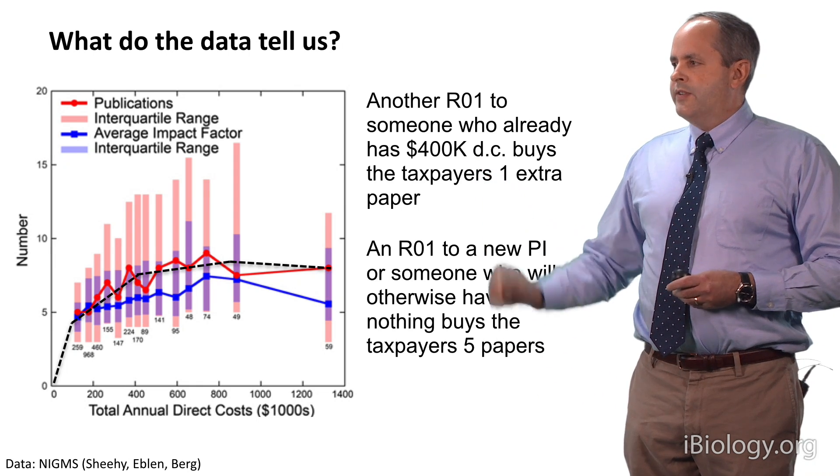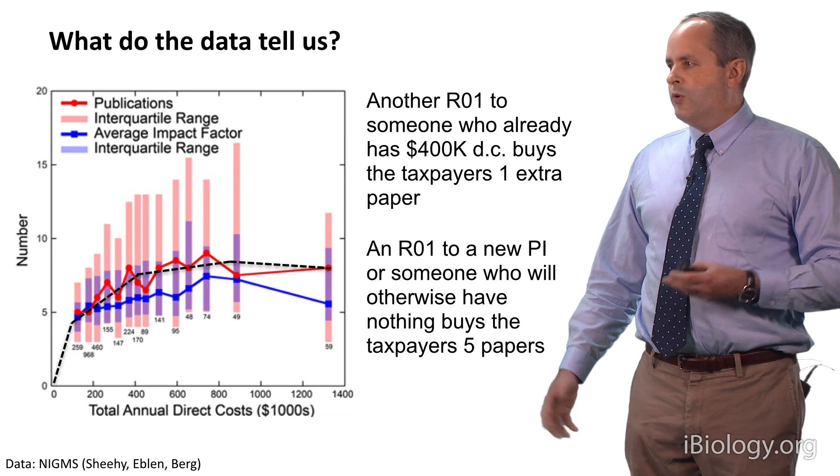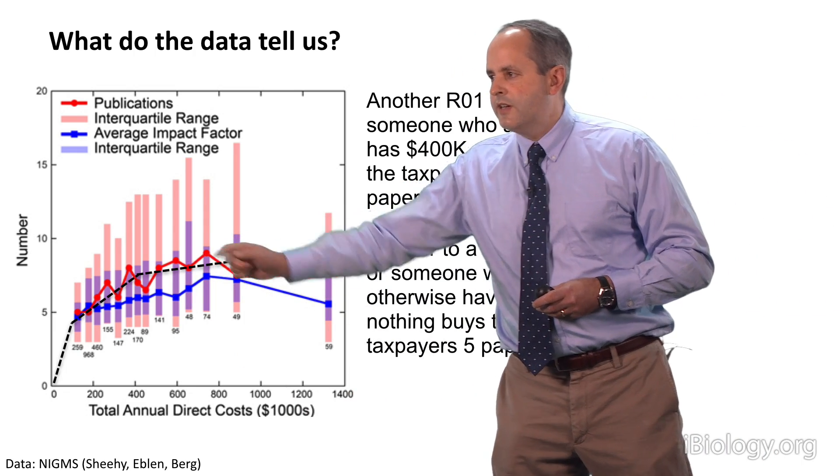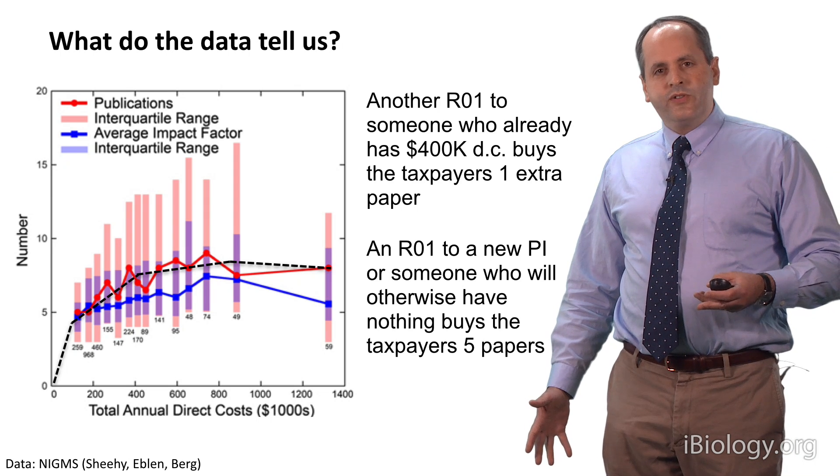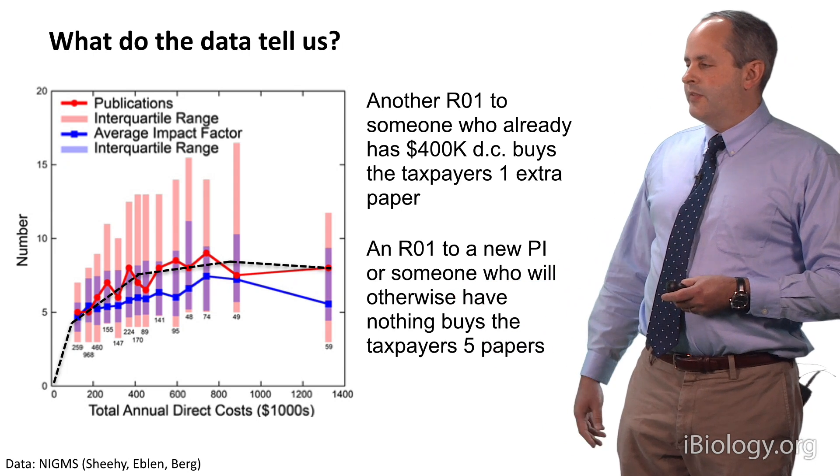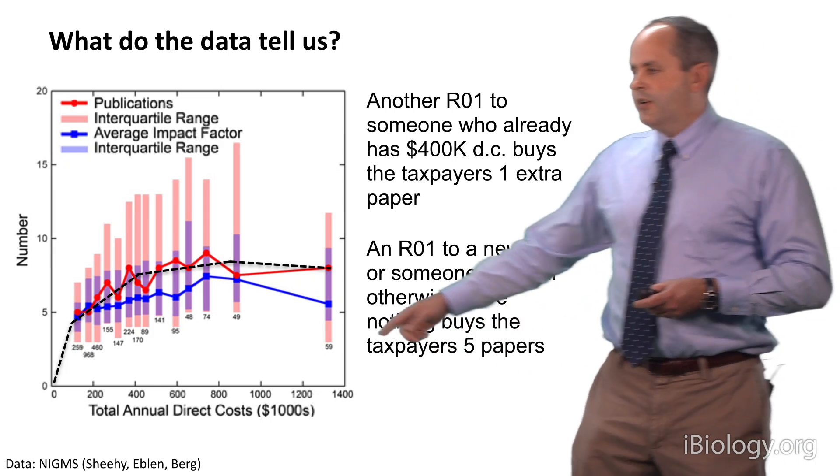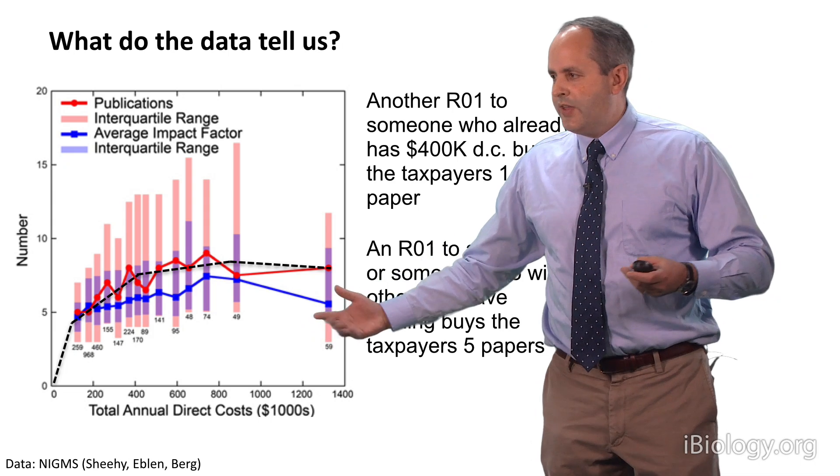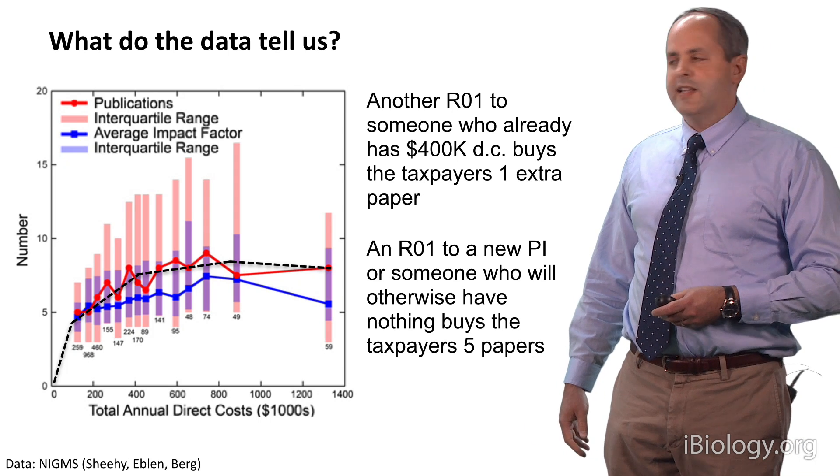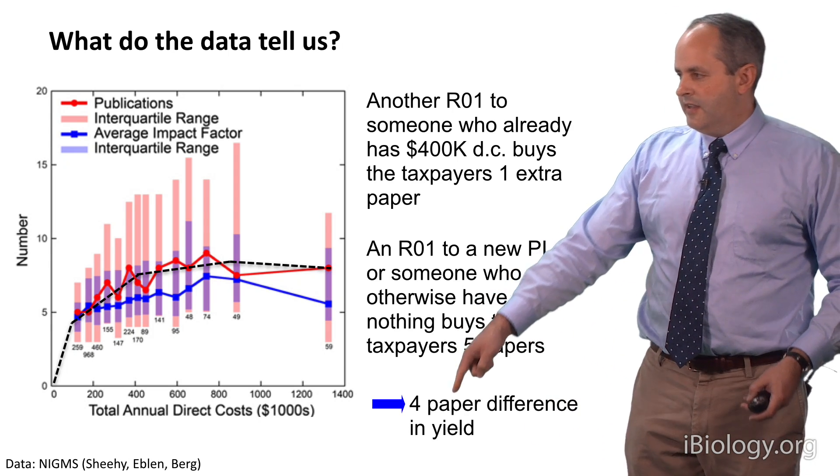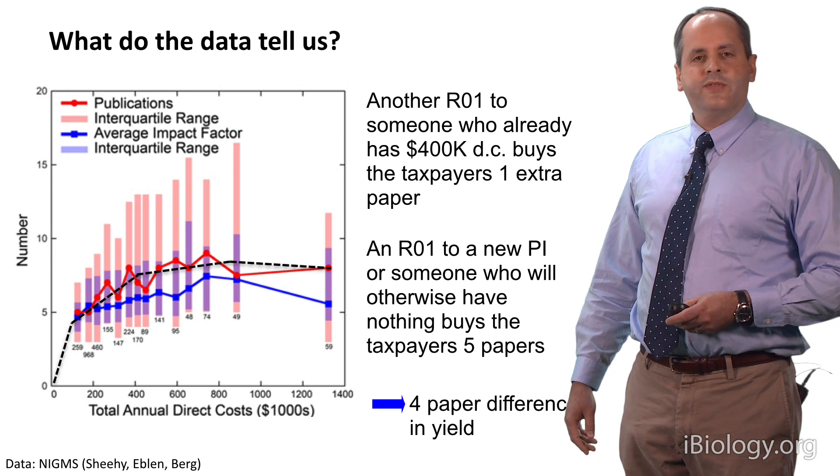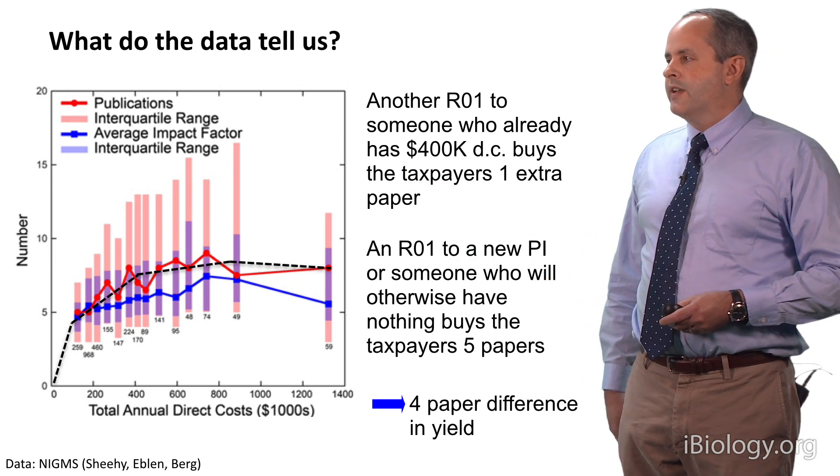Now, if we give a third grant to the established PI, we will take him from $400,000 in direct cost to $600,000 in direct cost. If you look at the graph, you'll see that, on average, that will buy the taxpayers one extra paper in this grant period of time. In contrast, if we give a new grant to the young PI, we'll take her from zero to about $200,000 in direct cost. And that, if you look at the graph, will buy the taxpayers, on average, about five papers in that grant period. So it's not very hard to see that, on average, we're going to buy the taxpayers four additional papers by taking the grant for the young investigator, rather than giving a third grant to the established investigator.